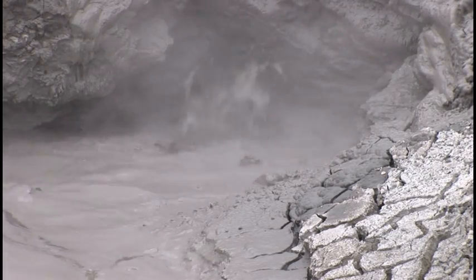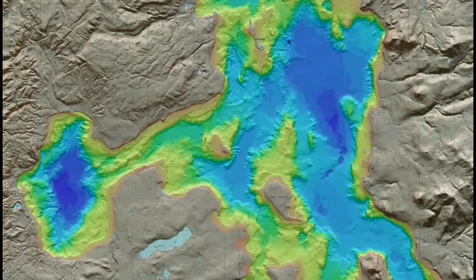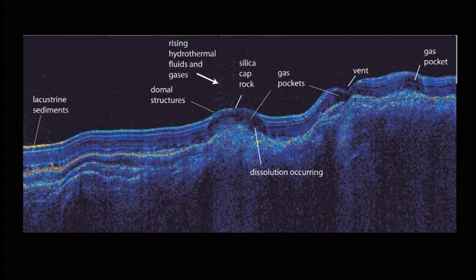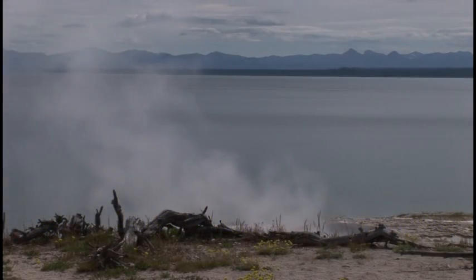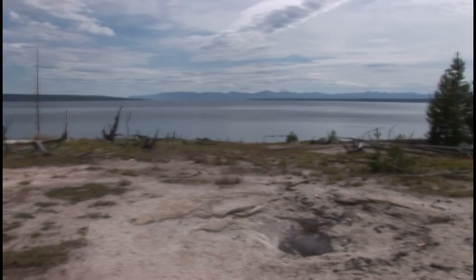We plan on deploying these instruments at three major places in Yellowstone Lake and leaving them on the floor of the lake for a year so we can look at the various seismic events that happen during the year. We can look at how lake level changes affect the hydrothermal vents, and we can also look at how seasonal changes with lake level lowering and rising have an influence on the hydrothermal vents.